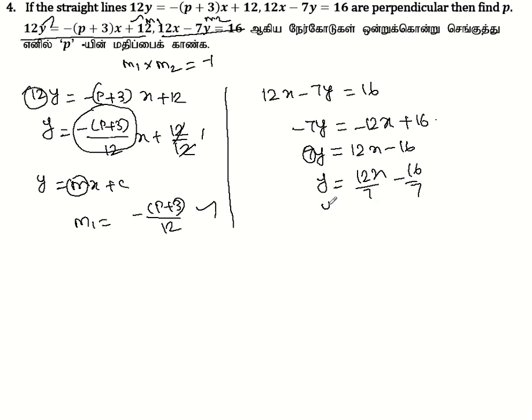Dividing through by 7: y = (12/7)x minus 16/7. Comparing with y = mx + c, the slope m2 = 12/7.